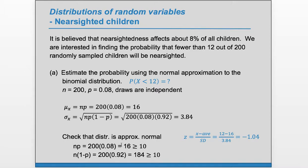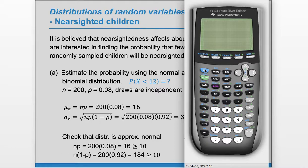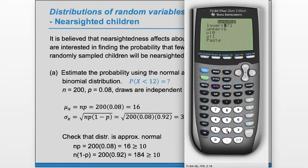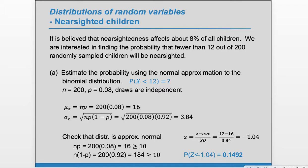That gives us a z-score of negative 1.04. Because we are looking for fewer than 12, we shade to the left — we want the area to the left of negative 1.04 under the normal curve. Using a TI calculator, go to 2nd VARS and choose number 2, normCDF. Set the lower bound to a large negative number like negative 6 and the upper bound to negative 1.04. That gives us 0.1492, which is our answer: the probability that fewer than 12 children have nearsightedness.